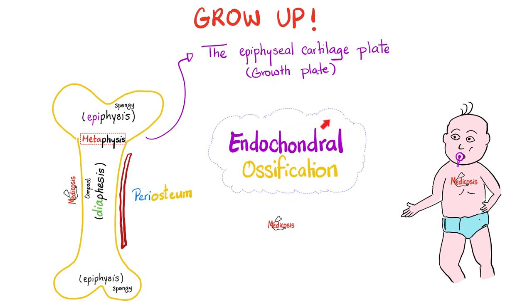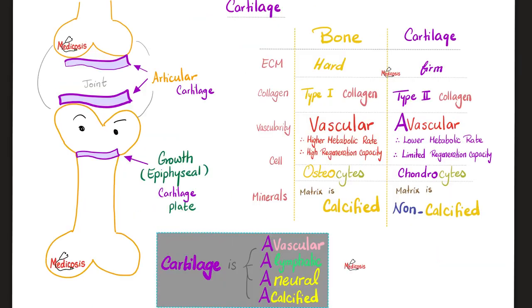The cartilage will die, and on top of that dead cartilage we will lay down new bone — endochondral ossification. Because we have two types of ossification: the first is called membranous ossification, the second is endochondral ossification. We'll talk about that later when we discuss bones.